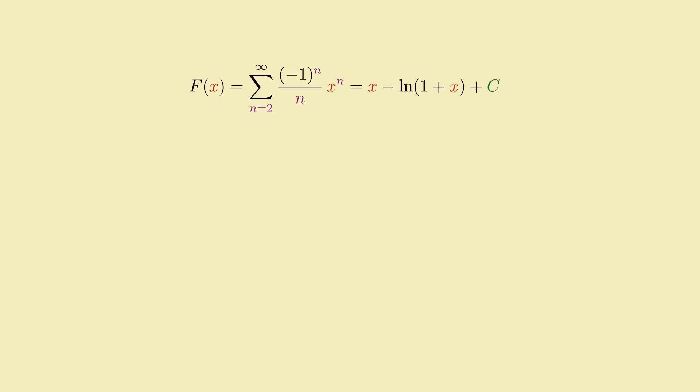Integration produces an unknown extra constant, of course, but we can solve for it pretty easily by plugging in 0 for x on both sides. In the series, this wipes out all the terms, leaving us only with 0, allowing us to solve for the constant c on the right-hand side. In this case, we get c is 0, so we can just delete it from the right-hand side. So we finally arrive at a formula for this infinite power series.